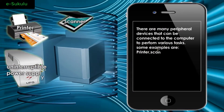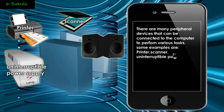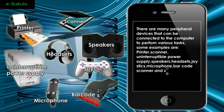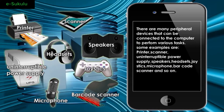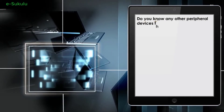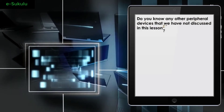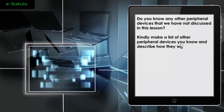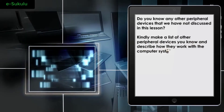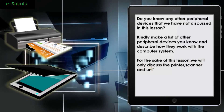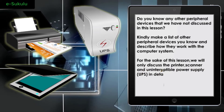There are many peripheral devices that can be connected to the computer to perform various tasks. Some examples are printer, scanner, uninterruptible power supply, speakers, headsets, joysticks, microphone, barcode scanner, and so on. For the sake of this lesson, we will only discuss the printer, scanner, and uninterruptible power supply (UPS) in detail.